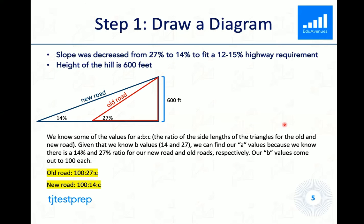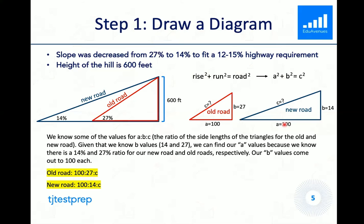Using our knowledge of the Pythagorean theorem, we can substitute the value of a and b to find c. We know some of the values for the ratio of a to b to c, the ratio of the side lengths of the triangle for the old road and new road. Given that we know our b values, which are 14 and 27,